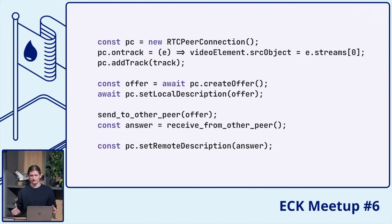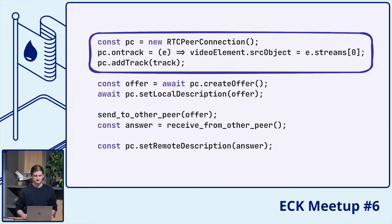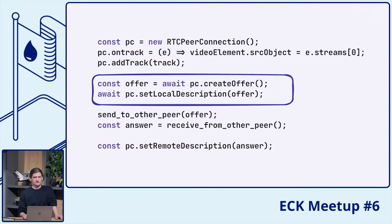We start by creating the RTC peer connection object, then we can add tracks to the peer connection. A track can be obtained from other APIs available in JavaScript, like the media devices API, which allows you to grab a track from a webcam, a microphone, or maybe a screen share, and add that track to the peer connection. We can also set up the on-track handler, which handles tracks from the remote peers — in this case we simply attach the track to an HTML video element. Then we have to create something called an offer. An offer is a text message using the protocol called SDP — session description protocol — which describes the session: the number of tracks, type of tracks, whether it's audio or video, codecs used, IP addresses and ports for peer-to-peer establishment, certificates for DTLS, and more.